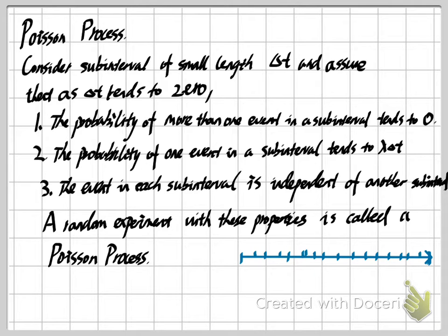The last requirement is that events in each subinterval should be independent of one another. Because each subinterval generally has only one event, all events are located in one specific subinterval and don't overlap with another. So all events or successes should be independent of each other. A classic example is customers arriving at a bank or ATM — two customers cannot arrive at exactly the same time; one always arrives even seconds before the other.